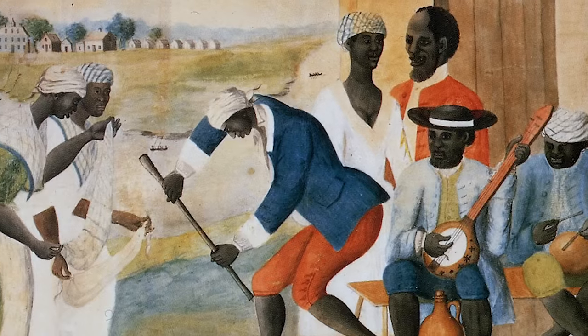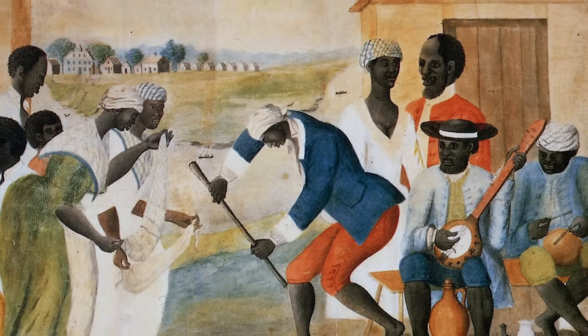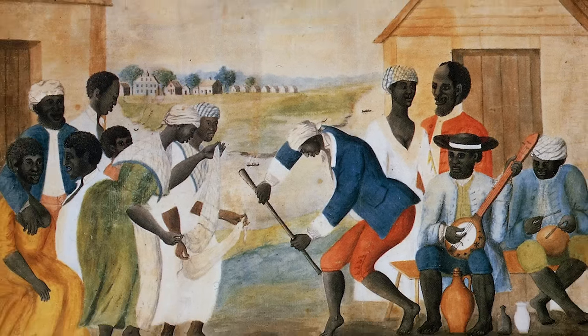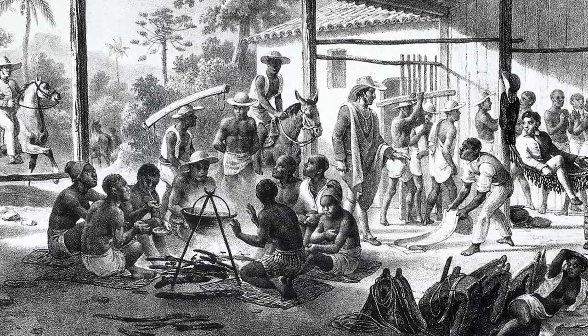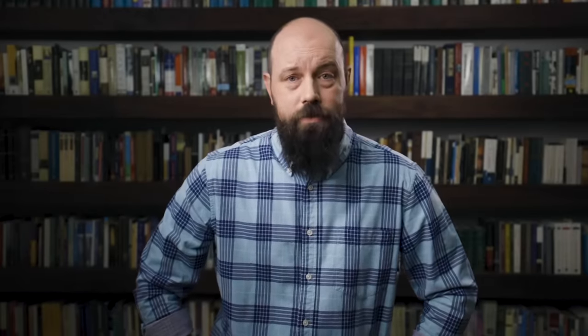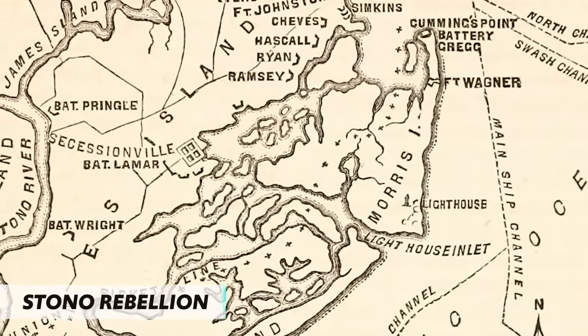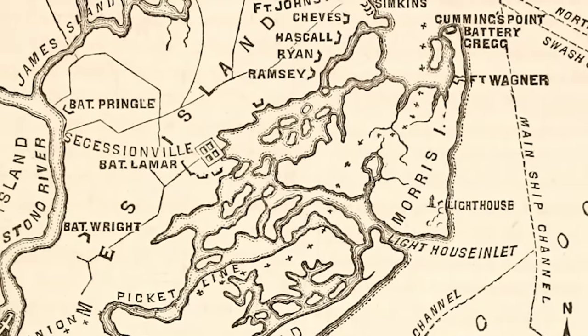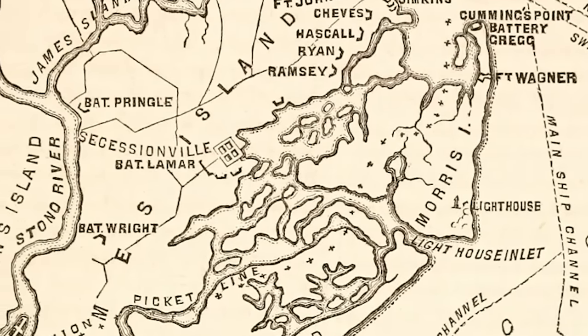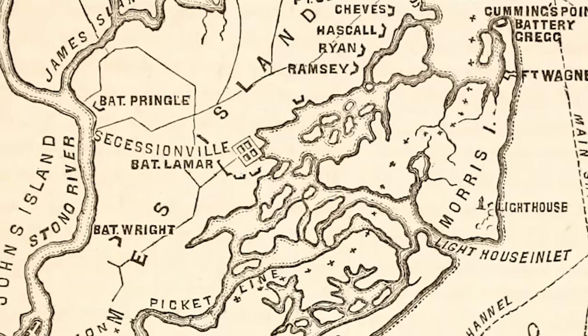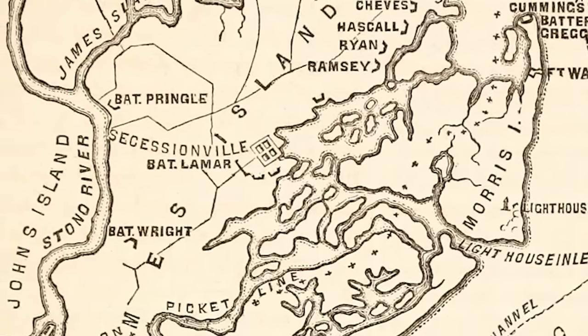Some enslaved Blacks didn't just accept this system — they rebelled and resisted in two flavors: covert and overt. Covert strategies included secretly maintaining cultural customs and belief systems from their homeland, breaking tools, ruining stored seeds with moisture, or faking illness. A significant example of overt resistance was the Stono Rebellion in South Carolina in 1739. A small group of slaves stole weapons, killed the store's owners, marched along the Stono River with growing numbers, burned plantations, and killed white colonists. The South Carolina militia finally squashed the rebellion, but not before losing many of their own.